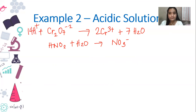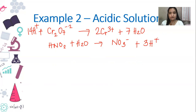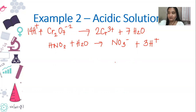For the second half reaction, counting the hydrogens: we have two from HNO2 and two from H2O — that's four on the left, and three on the right from NO3-, so we add 3 H+ to the right side. You can notice a pattern: when you add H+ on the left in one half reaction, you add it on the right in the other — it's always on the opposite side.